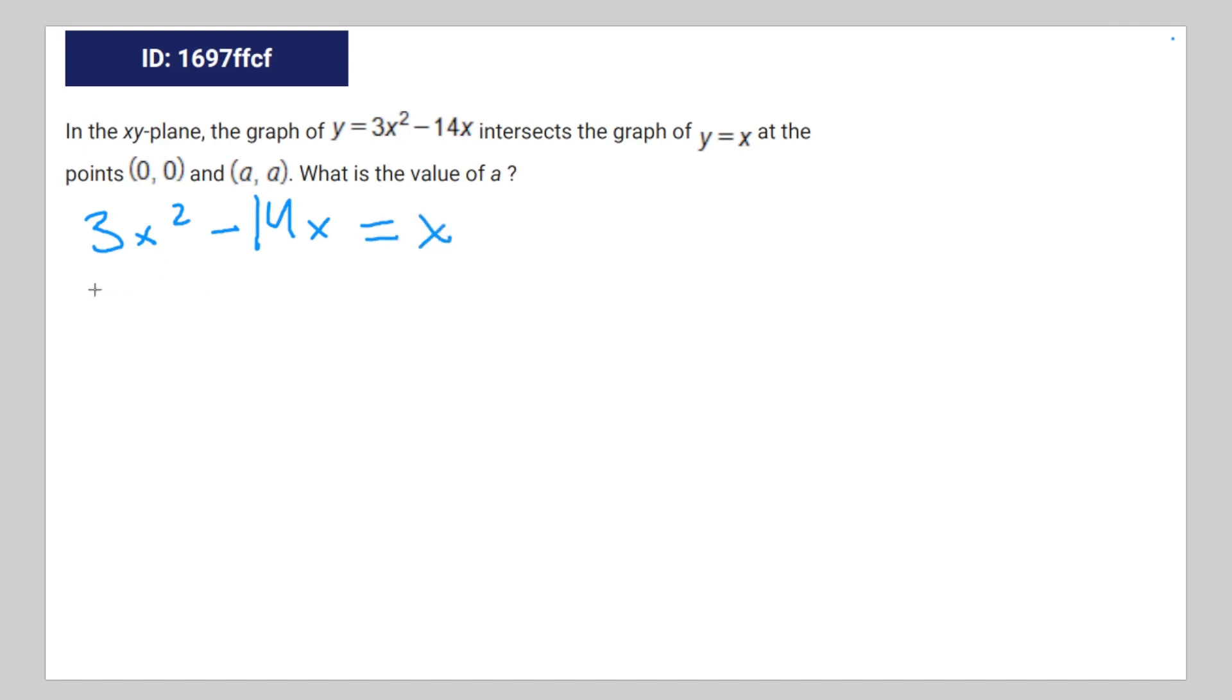Subtract x from both sides, you're going to get 3x² - 15x = 0.